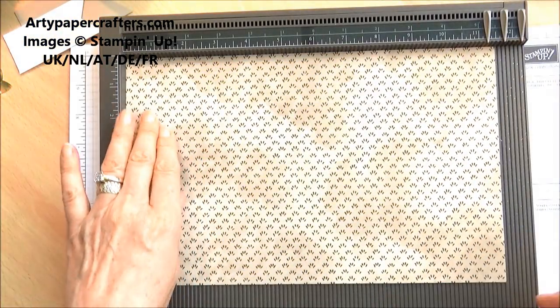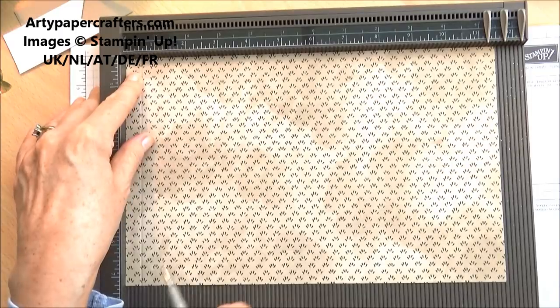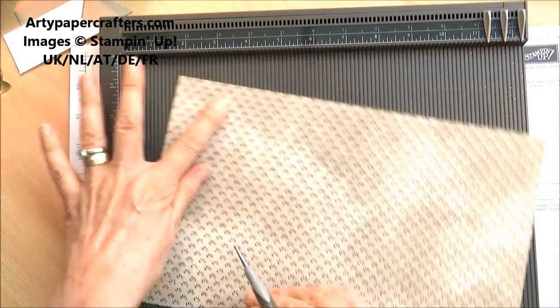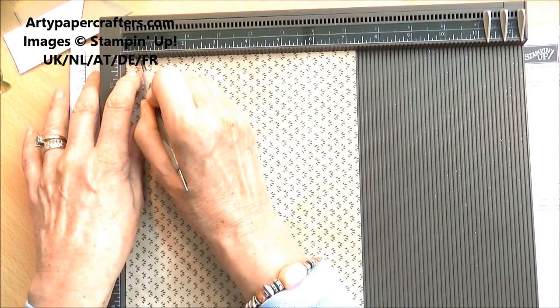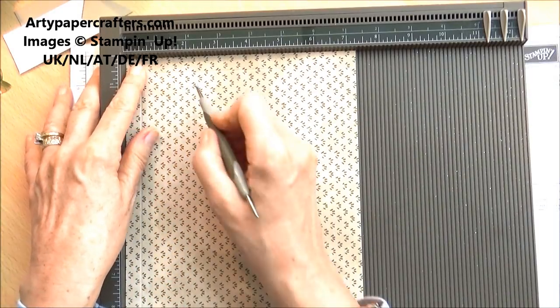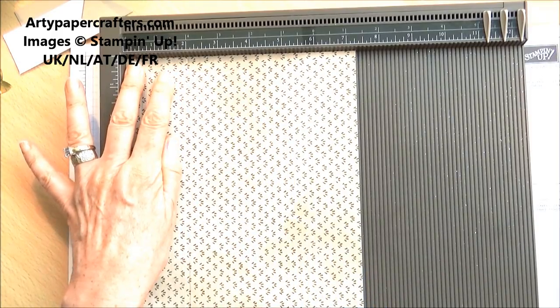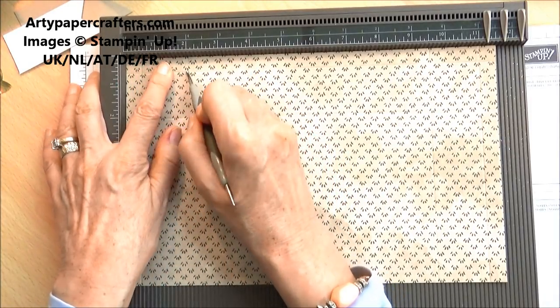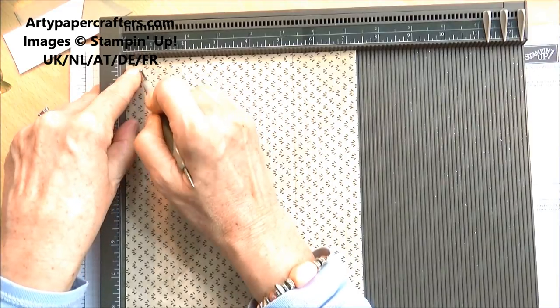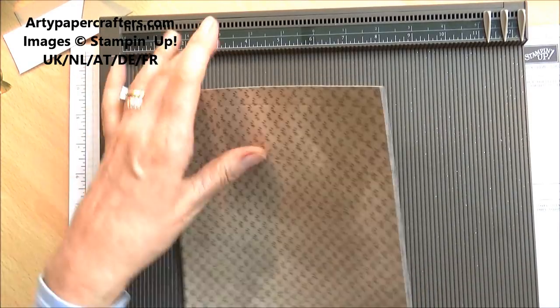For the lid we will need the measurements at 1/2 an inch and 2 inches on all four sides which is 2 and 5.5. So that's the scoring done, so let's put the board away.